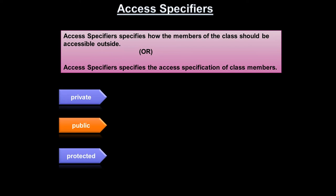The name itself indicates the behavior: private means it is a private property with access restrictions, and public means public accessibility. For example, a mobile is a private property — you cannot give it to anybody else. A telephone booth or public transport is a public property — any person can go and use those services.